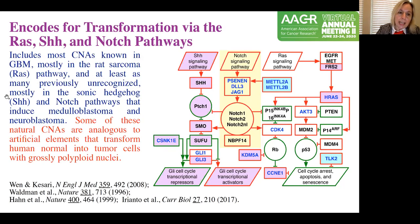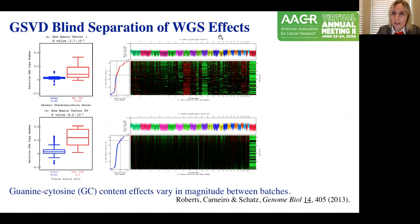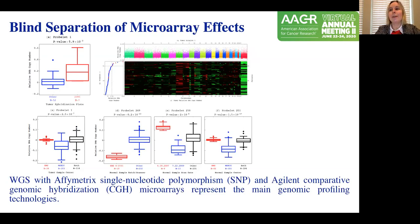Some of these pathways were previously known, some were previously unrecognized in GBM but make sense, and some are actually analogous to artificial elements shown to transform normal cells into tumor cells. What are the patterns we separate from the data? We have batch effects due to GC content in the whole genome sequencing data, exclusive to tumor or normal. We have batch effects in the Affymetrix microarray data and in the Agilent microarray data — each time completely different, superimposed on data sets of mutually exclusive patients, and each time we get the same genomic tumor-exclusive pattern predicting survival.